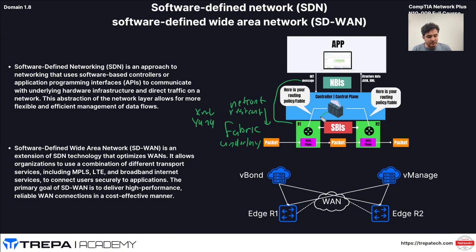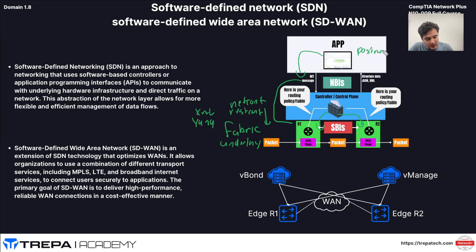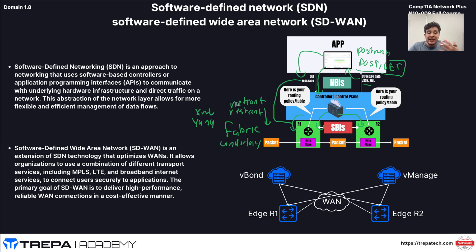The controller gets its configuration from northbound interfaces — from a web GUI like vManage in an SDWAN environment, or Catalyst Center for SD-Access. It could also be tools like Postman making POST or GET requests via REST APIs to the controller — for example, a GET to retrieve and reformat JSON data, or a POST to push a change down to a device via NETCONF or RESTCONF.